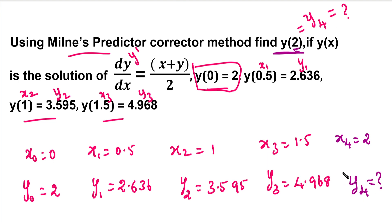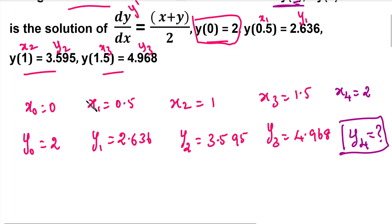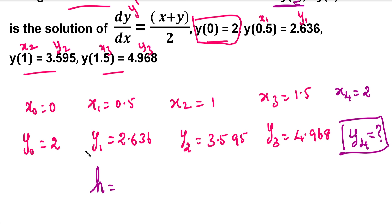So y4 is what we need to find using Milne's method. First we need the h value — the common difference in x. There are 5 values of x: 0, 0.5, 1, 1.5, 2. So h = 0.5.